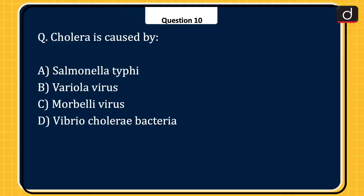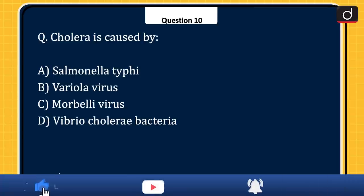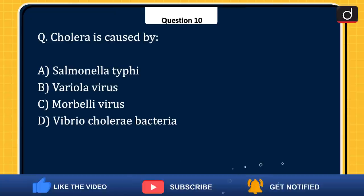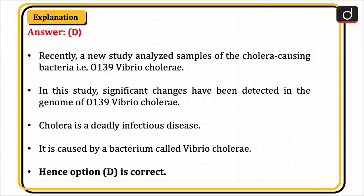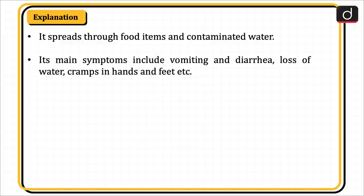Last question: cholera is caused by Salmonella typhi, variola virus, morbelli virus, or Vibrio cholerae bacteria? The correct answer is option D, Vibrio cholerae bacteria. Recently, a new study analyzed samples of the cholera-causing bacteria 0139 Vibrio cholerae, detecting significant changes in its genome. Cholera is a deadly infectious disease caused by Vibrio cholerae. It spreads through food items and contaminated water. Its main symptoms include vomiting and diarrhea, loss of water, and cramps in hands and feet.